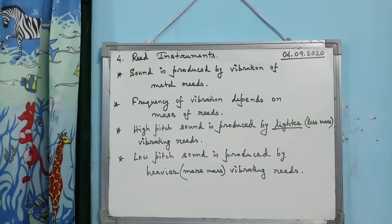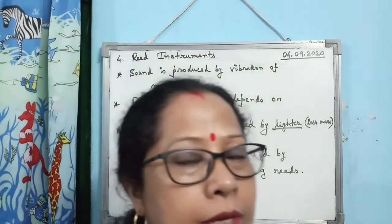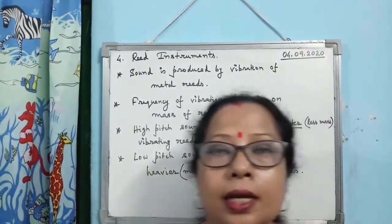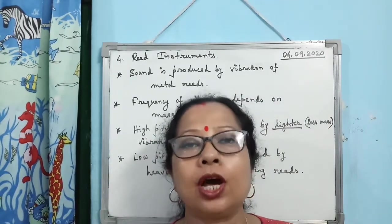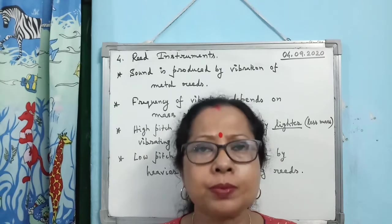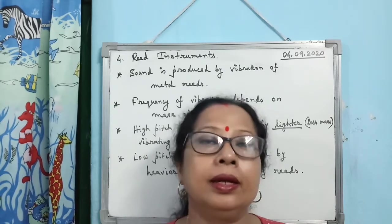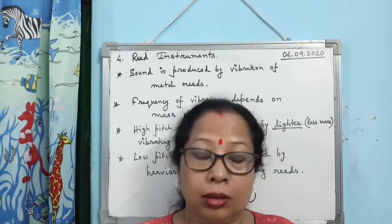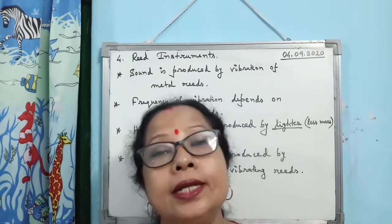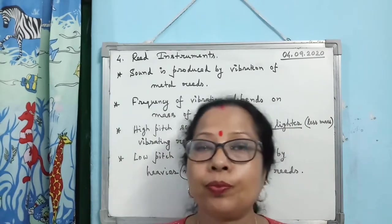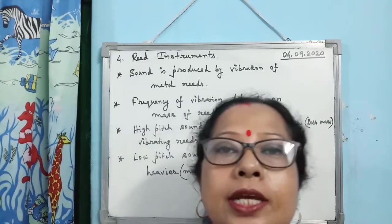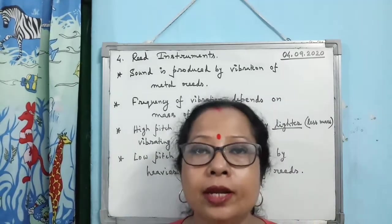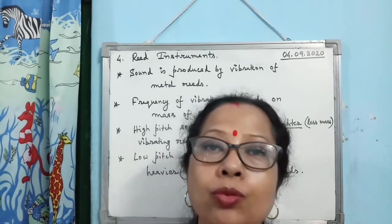The next and last type of instrument I am going to discuss is the reed instrument — harmonium and mouth organ. In the case of reed instruments, sound is produced by the vibration of metal reeds. The frequency of sound produced depends on the mass of the reed. A heavier reed produces low pitch sound.